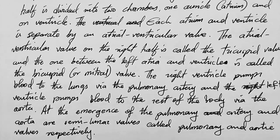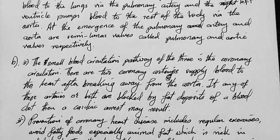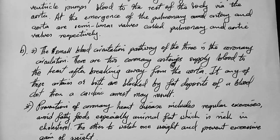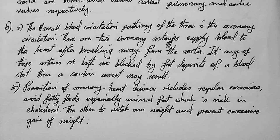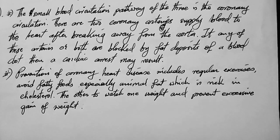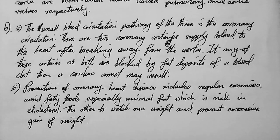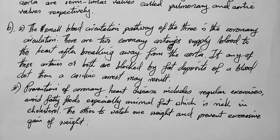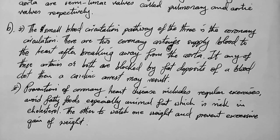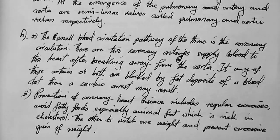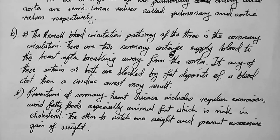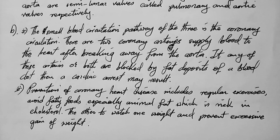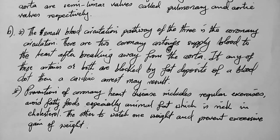Moving on to question 7b1: explain the causes of coronary disease. The coronary circulation is the smallest blood circulation pathway of the three — pulmonary, systemic, and coronary circulation. There are two coronary arteries which supply blood to the heart after branching away from the aorta.